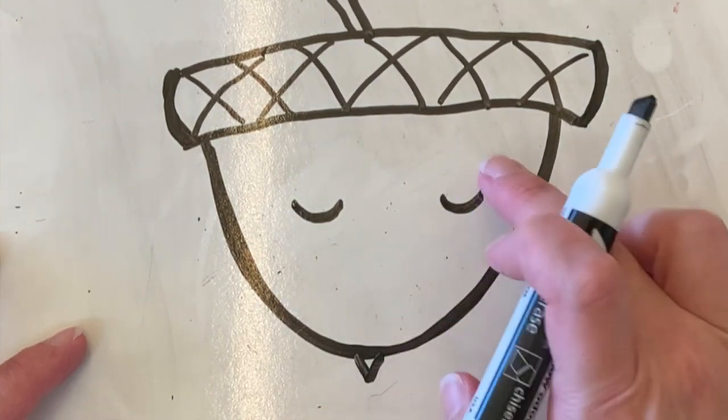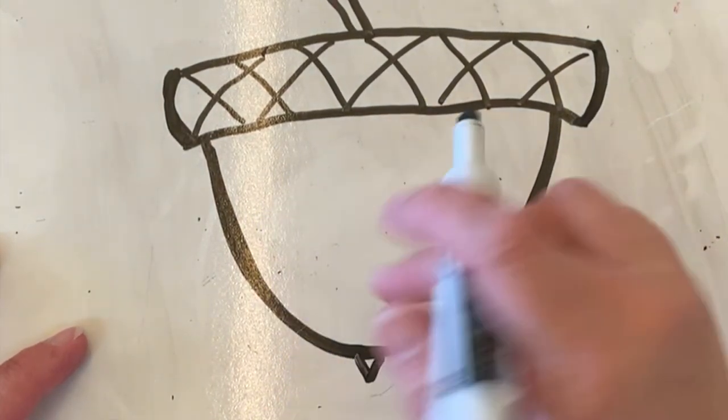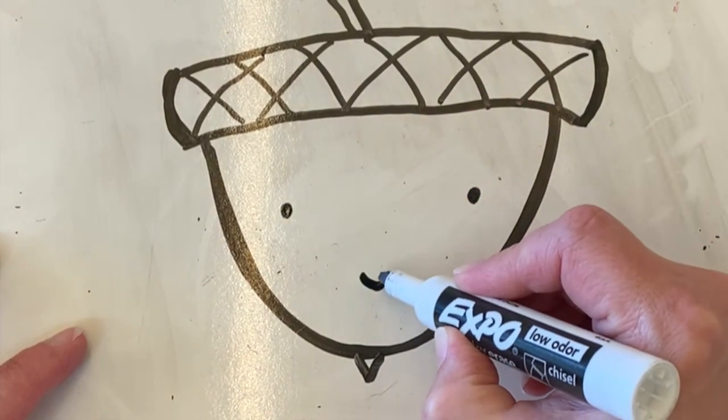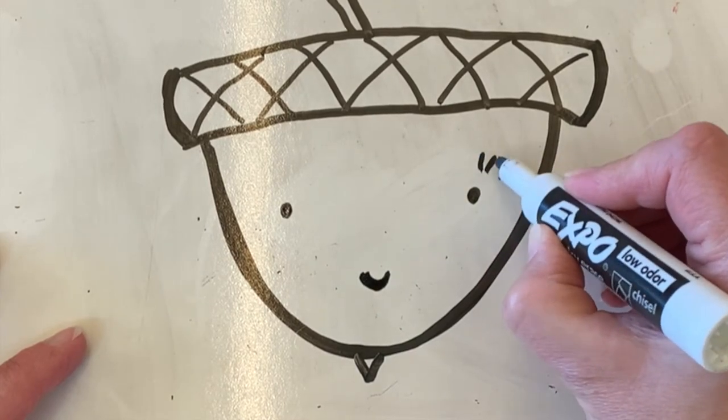Let's see, what else could we do? Our little acorn person could also have a sweet little smile and eyelashes. So lots of options for your acorn person.